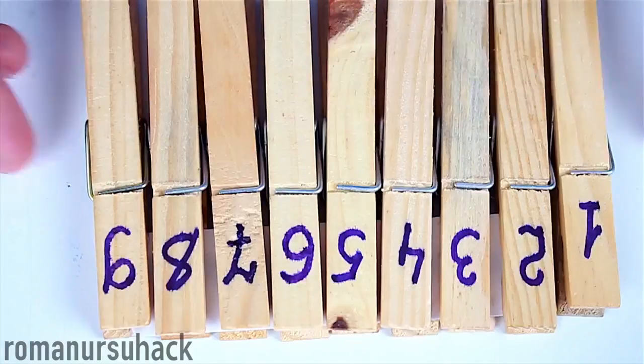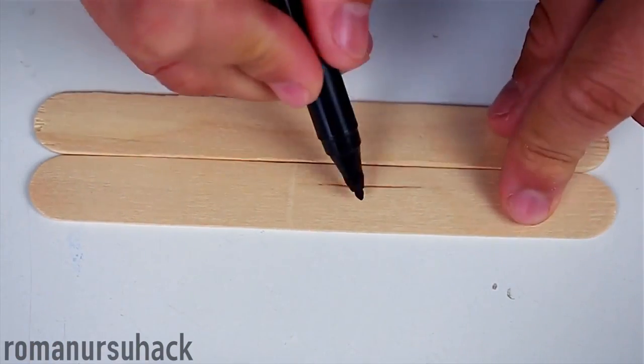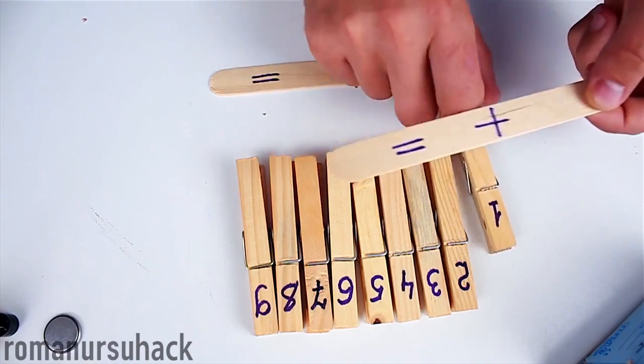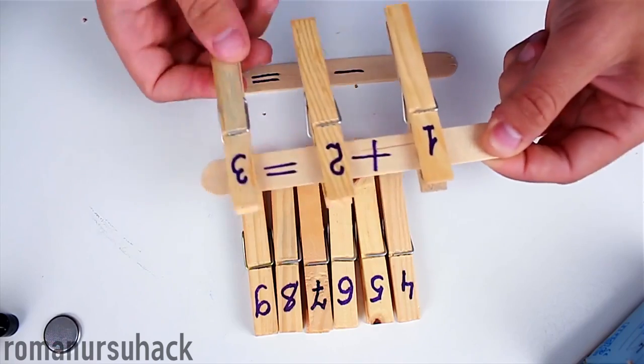Now let us put down a plus and equal sign on the stick, then a minus and equal sign on the other stick. For more advanced users, you can make sticks with multiplication and division signs on them.